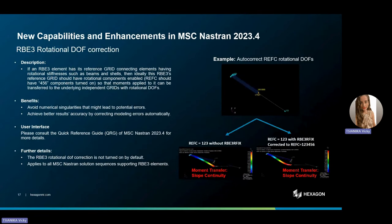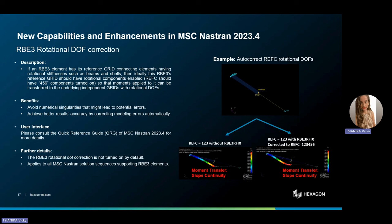In the context of RBE elements, this release brings an automated correction for additional degrees of freedom, addressing potential numerical singularities that could otherwise result in simulation errors. This new capability automatically rectifies modeling errors introduced during the modeling process. By ensuring that the reference grid has rotational components enabled, it facilitates moment transfer to underlying independent grids with rotational degrees of freedom, thus enhancing the accuracy and stability of the simulations.